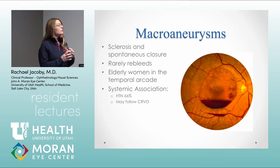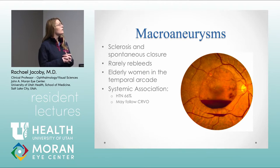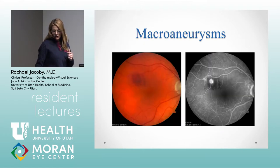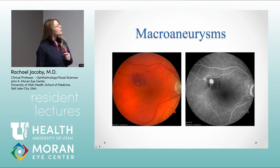Once they bleed they fibrosis and that's usually it, but sometimes they continue to leak and you might need to consider laser treatment. With a really large hemorrhage, surgery may be needed to clear the blood. We typically see this in older women — hypertension is a very common comorbidity. On fluorescein angiogram you can see the dilation light up clearly, where the color photo may not show it well. There may also be a second smaller macroaneurysm nearby.